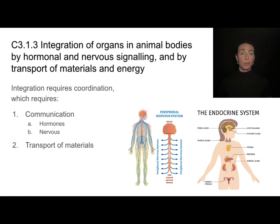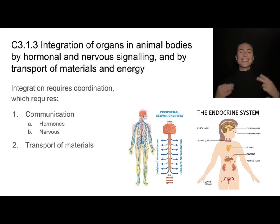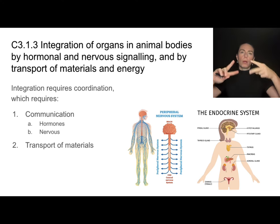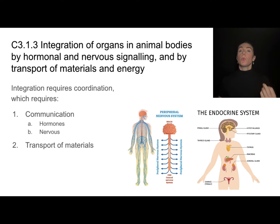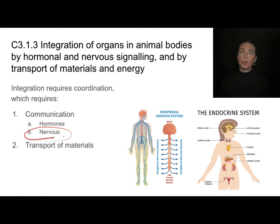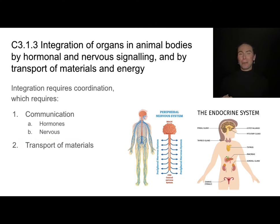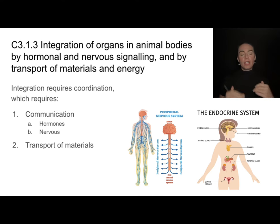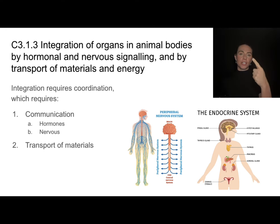To truly have integration, you must have two things: communication and transport of materials. This is how organ systems will integrate or coordinate their actions together. Communication can happen in a couple of different modes — either through hormones or through nervous signaling. And transport must also occur, through the blood, through the lymph, or in plants through xylem or phloem. Coordination and integration must fulfill both requirements of communication and transport.